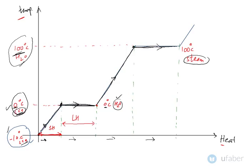So in sensible heat there will be some temperature change but the phase will remain the same. In latent heat there will be no temperature change but there will be a change of phase. The graph also shows a second region of sensible heat followed by another region of latent heat.